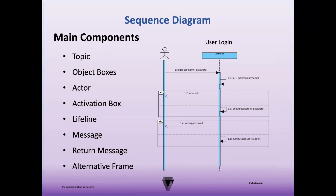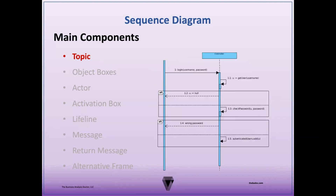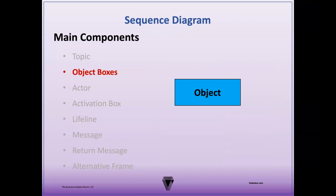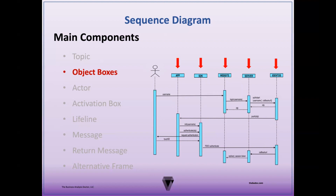The topic describes the scenarios and interactions within a system — it's essentially the name of the use case the diagram is illustrating, for example, user login. Object boxes are the elements included within the system of a scenario. They're represented by rectangles labeled as the class, object, or element they represent, for example, ATM user interface. In an object level sequence diagram, they may include additional details regarding the specific objects being analyzed. Each object box has a designated column, and these columns organize the elements horizontally along what is called the object dimension.